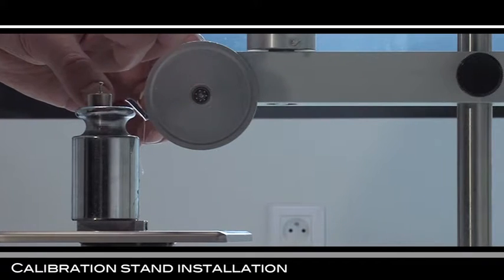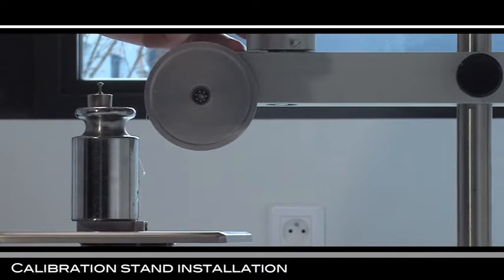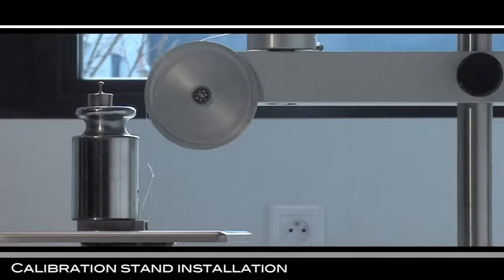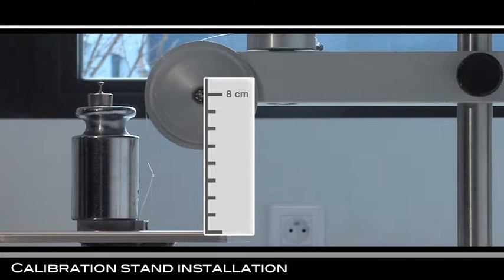Hook the nylon thread on the pin of the tare and get it over the pulley. Adjust the height of the whole calibration set in order to place the middle of the pulley at approximately 8 cm from the plate of the balance. Verify that the nylon thread is correctly in line.